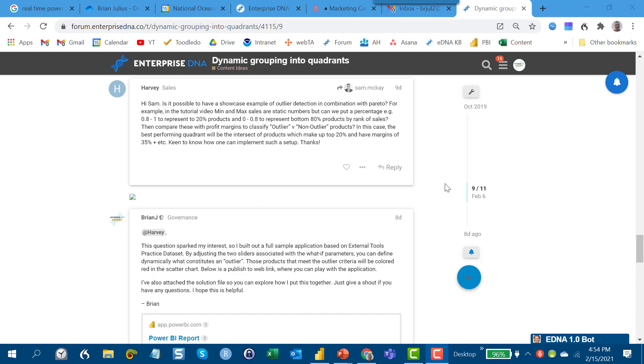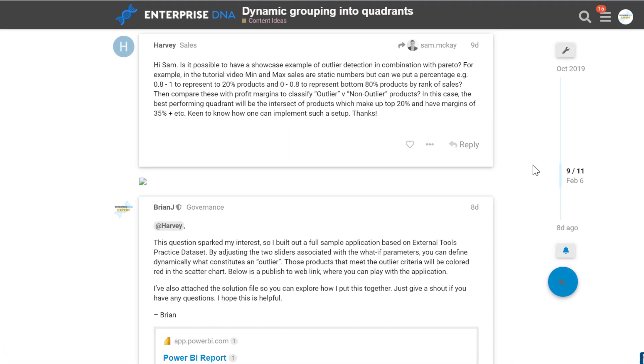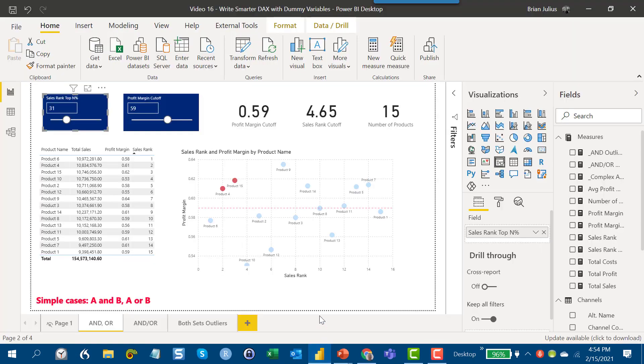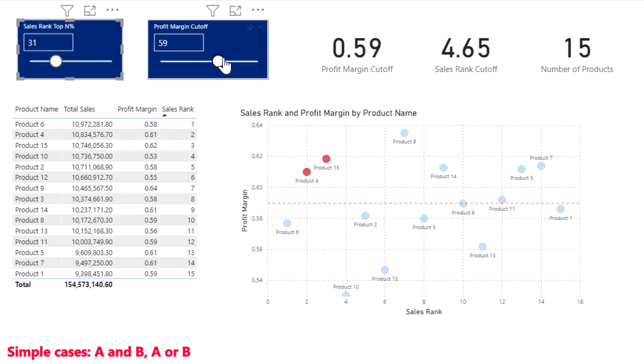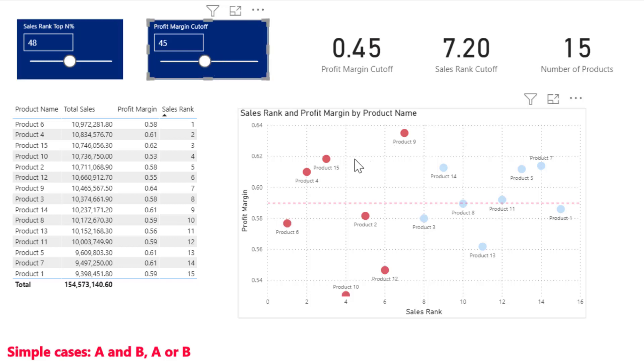This was based on a question from member Harvey and what he was looking to do was combine a Pareto analysis with an additional criteria. In this case, what he wanted to do was to look at the top 20 percent of sales rank and also the intersection of that with products that had margins over a certain percent. So what I did was built out a draft solution for him and it had a series of sliders, one for sales rank and one for profit margin cutoff, and depending on your parameters here for the two, it'll color in the products that meet both criteria, so basically an AND condition.